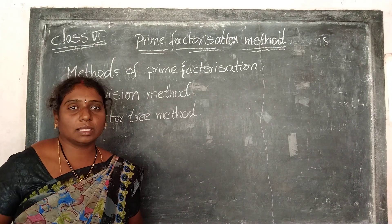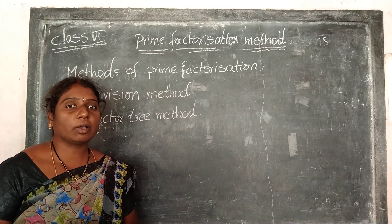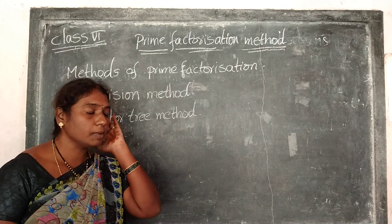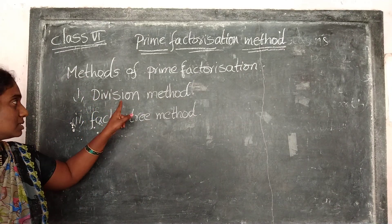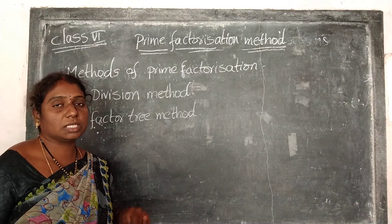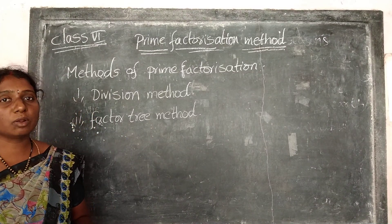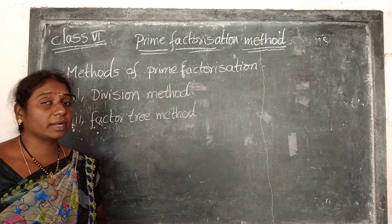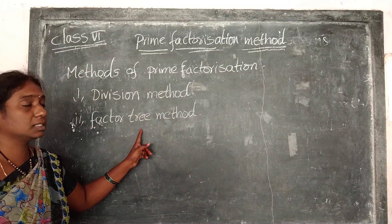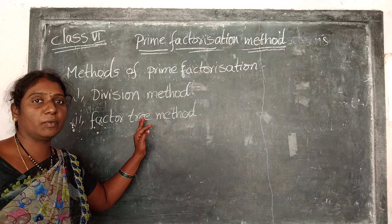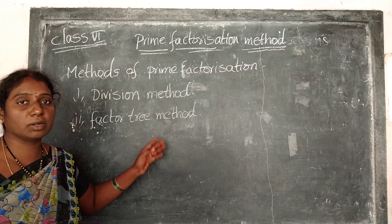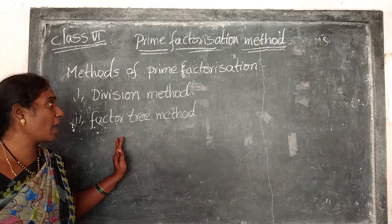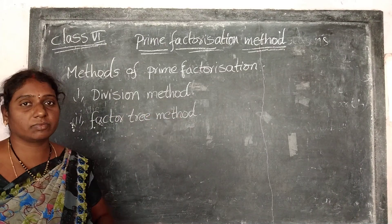Understood? Now, for prime factorization there are some methods. How many methods are there? There is a division method and one more is a factor tree method. We are finding the prime factors using these two methods. When they give any number, we use these two methods to find out the prime factors of the given number.